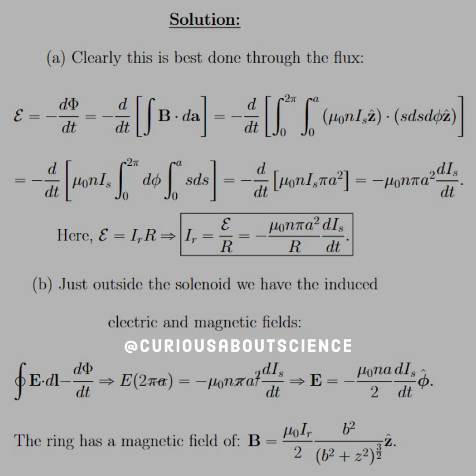Now, just outside the solenoid, we have the induced electric field and the magnetic fields. We can find the E field from the flux, Faraday's law. The line integral goes to E times 2 pi A, the circumference. D phi we just calculated above, so plug that in. You see that pi A factor cancels. Solve for E, and you get negative mu naught N A over 2, dIS over dt in a phi hat direction.